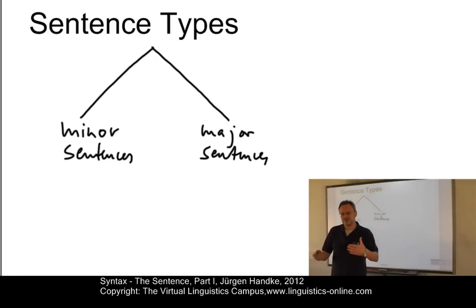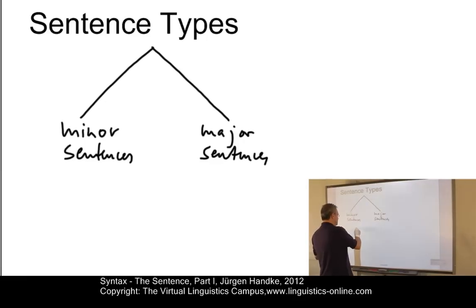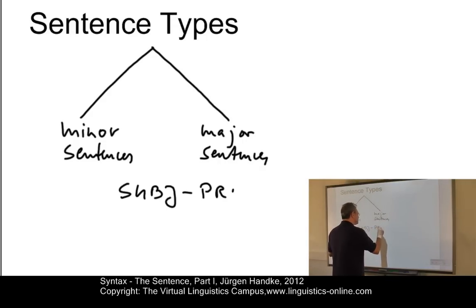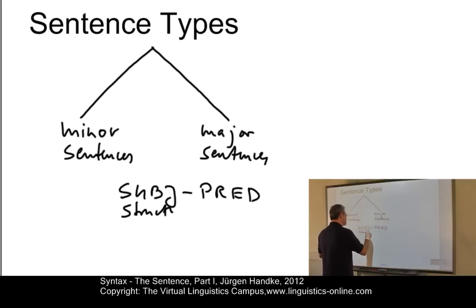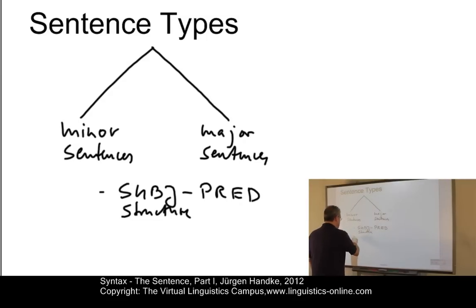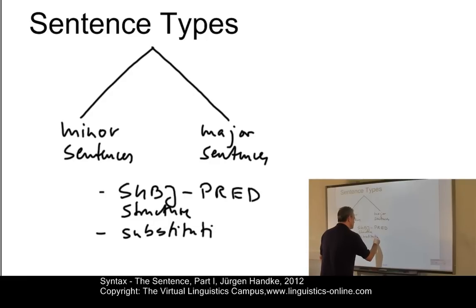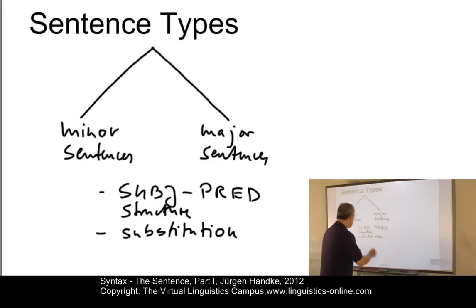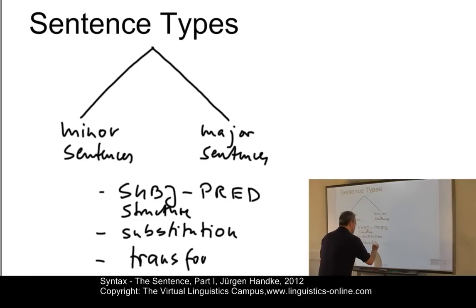They can be distinguished via three central criteria. Criterion one is the availability of what you might want to call a subject-predicate structure. A second one is a test which is often used in linguistics, the so-called substitution test. And the third criterion is a test which moves around elements within a sentence, the transformation test.